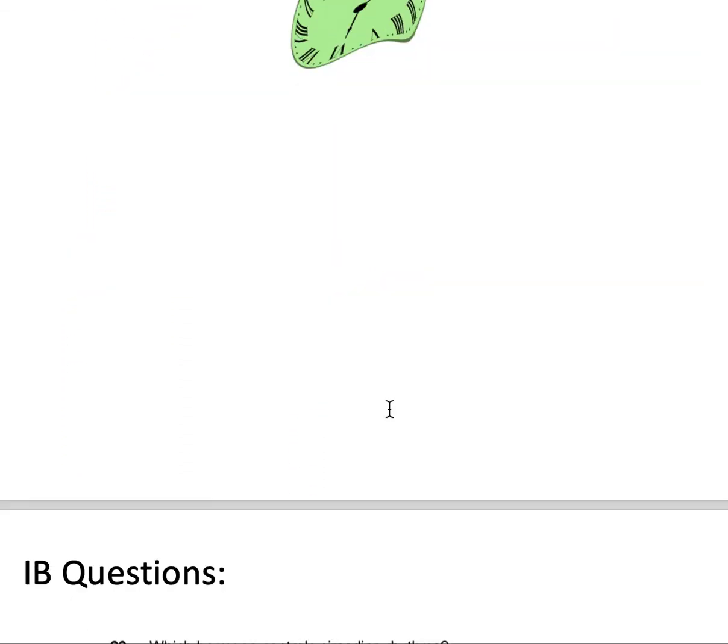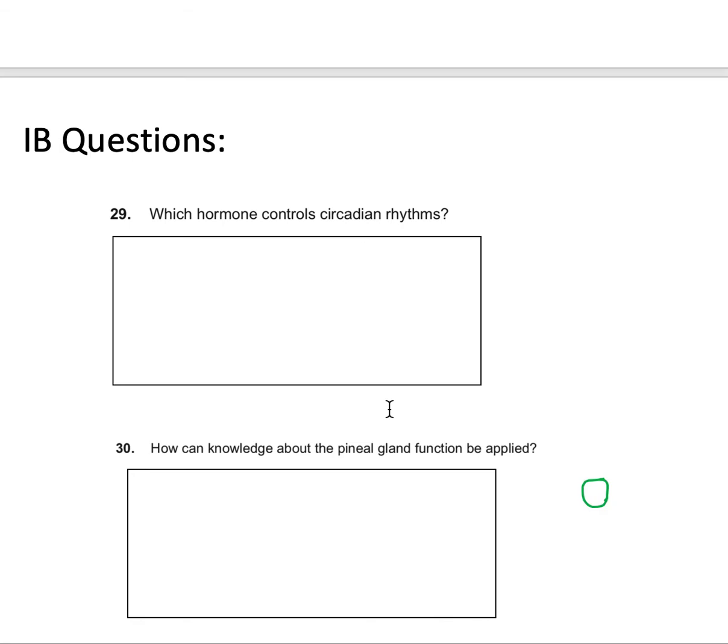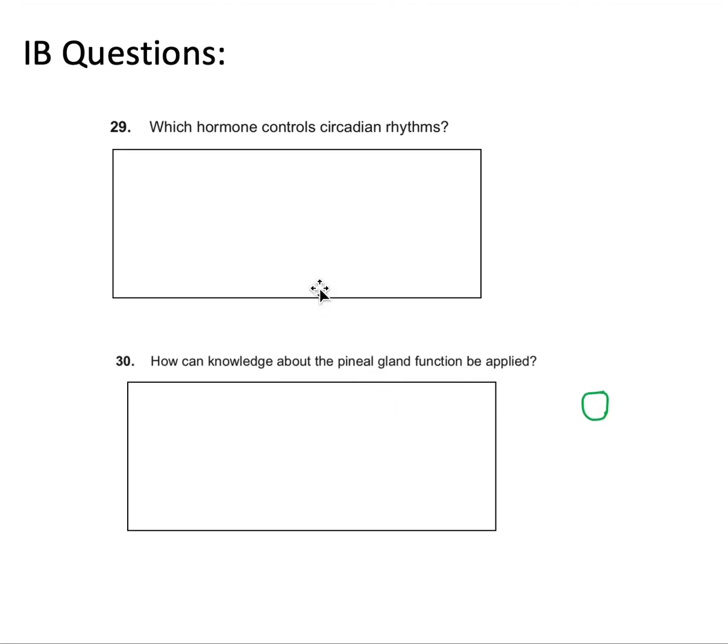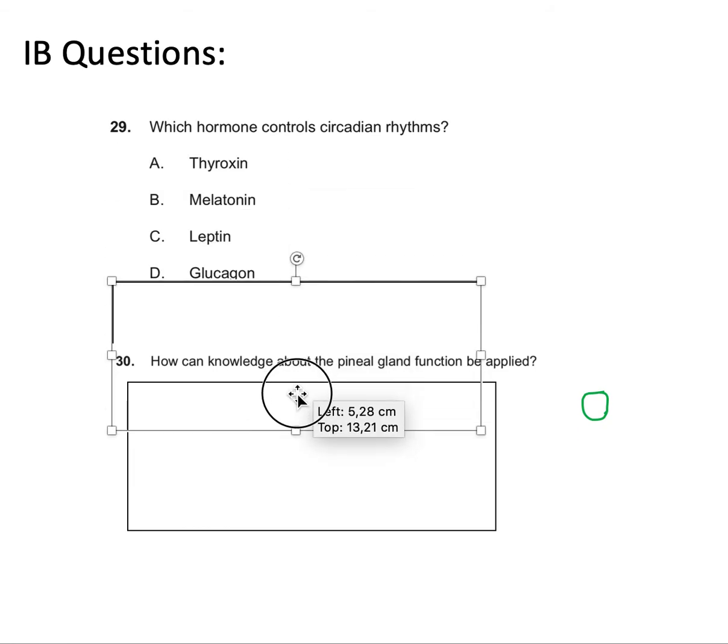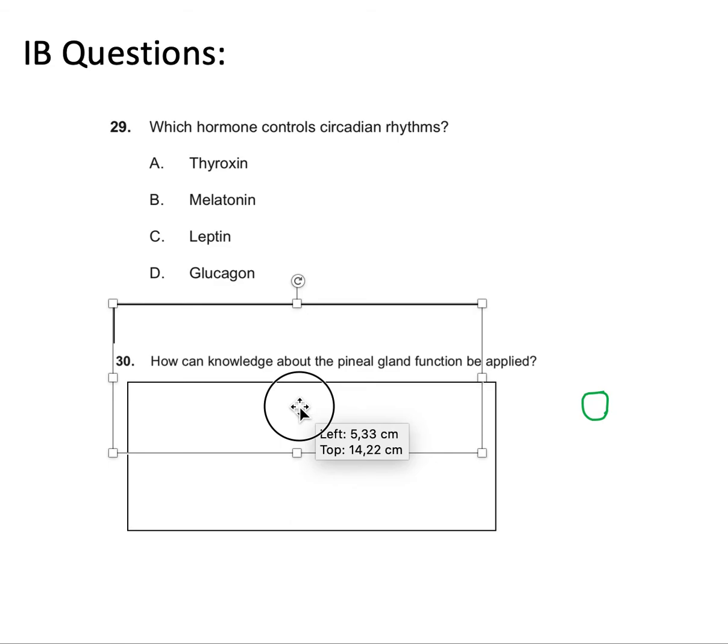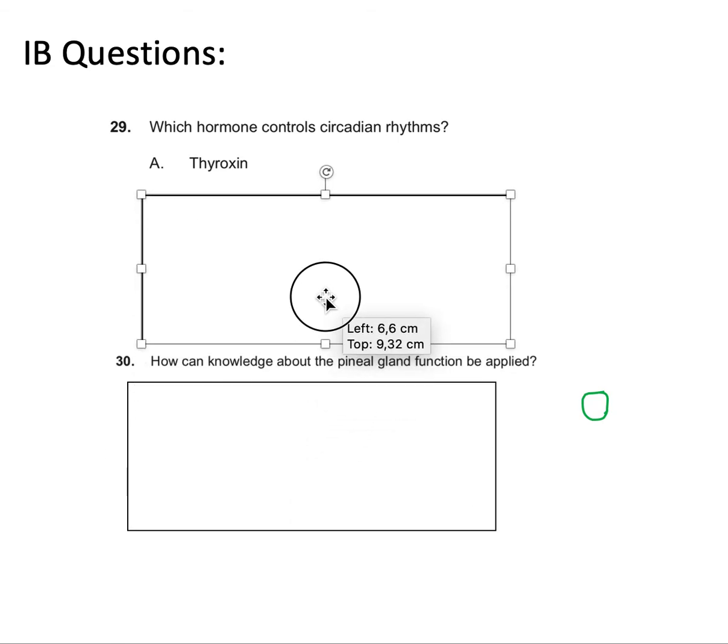Now let's go to some IB questions. These are just two questions. I couldn't find many. But they should be quite simple. These are multiple choice questions. Right now, I'll just show you the whole thing, so you can pause and see if you want to try 29 before I do it.